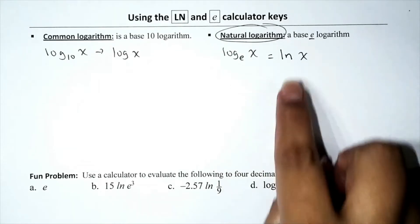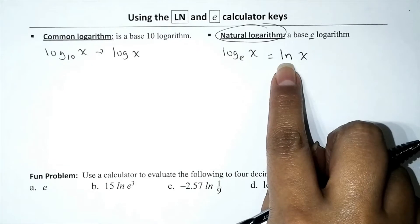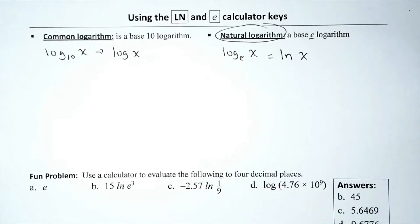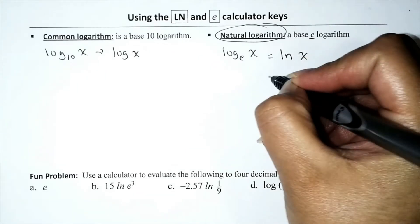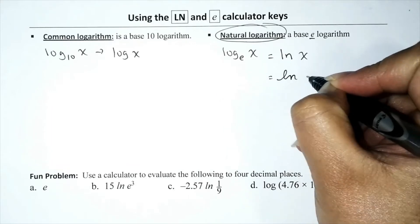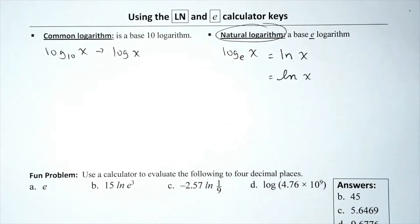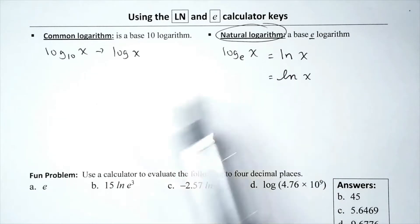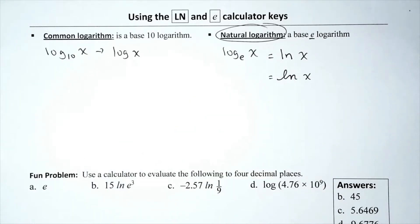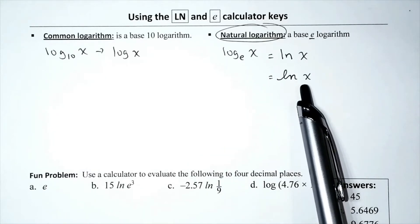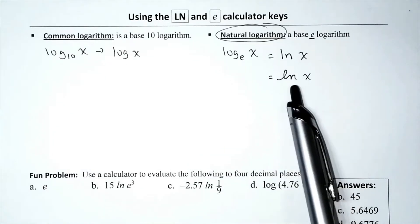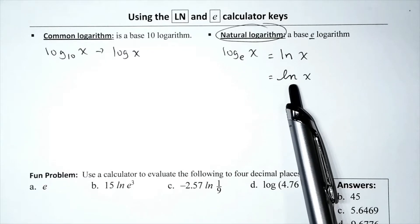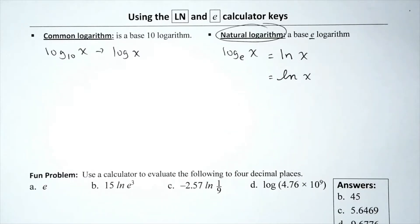To avoid confusing the lowercase 'l' with the digit one, sometimes in the book it's italicized. I'm not great at italics, so I'll write it in cursive. That way there's no risk of confusing the lowercase l with a 1. If we have the natural logarithm, that implies the base is e.